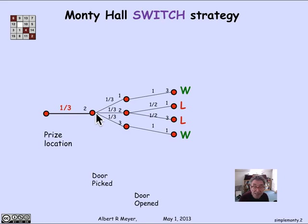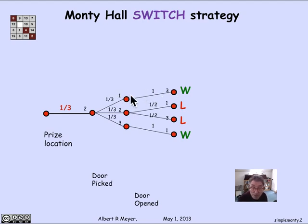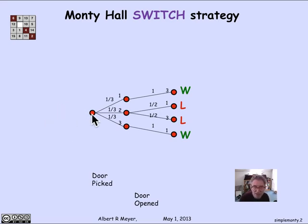Here, if the prize was at door two and the contestant picked door two, then Carroll has a choice of two doors — one or three — to open. On the other hand, if the prize was at door two and the contestant picked door one, Carroll has no choice but to open door three with probability one. Now when we're looking at this tree, the first branch is kind of fixed and forced, so we don't really need it as part of the analysis. What we're really looking at is analyzing what happens in the experiment starting at the stage where the contestant picks a door.